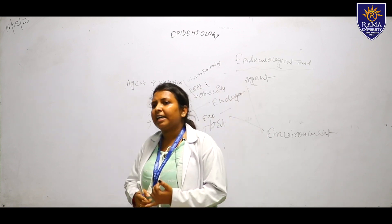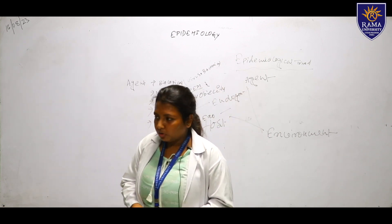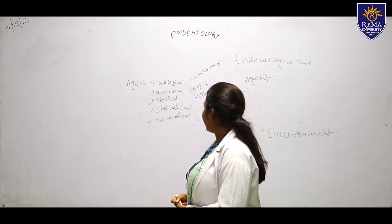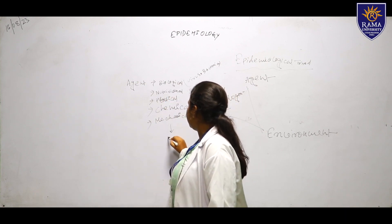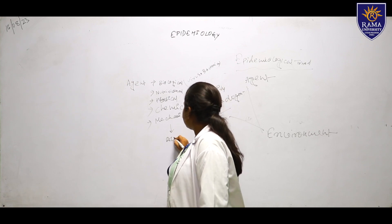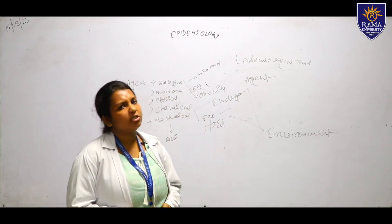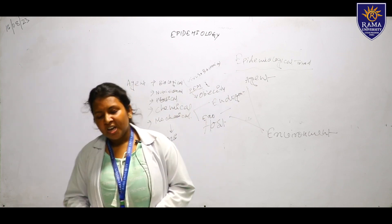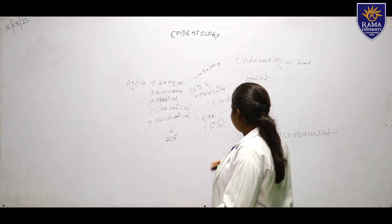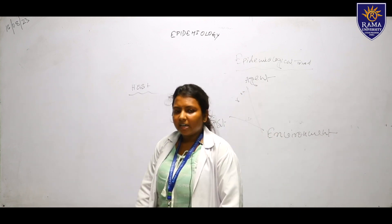Exogenous chemical agents include outside sources like any gas or pollution. The mechanical agent refers to any type of accident through machinery — if any harm happens to body parts through machinery, that is known as the mechanical agent. Next we move to the host.